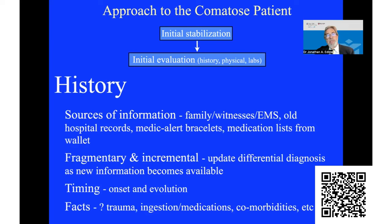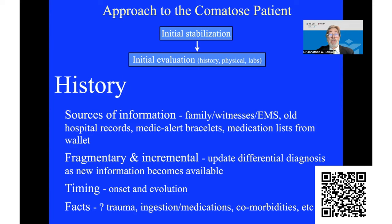The history comes to us in the emergency department in blasts of information — it's fragmentary, it's incremental. We might get information from family or witnesses, a shopkeeper for example, or from EMS. If we're sure about the patient's identity, we may get information from old hospital records. The patient may have a medical alert bracelet on their wrist, or a medication list in their wallet, and information gets updated every few minutes, or every 10 minutes, or every hour.